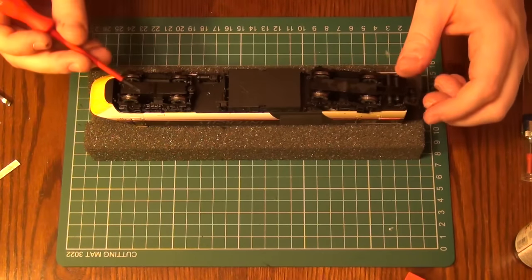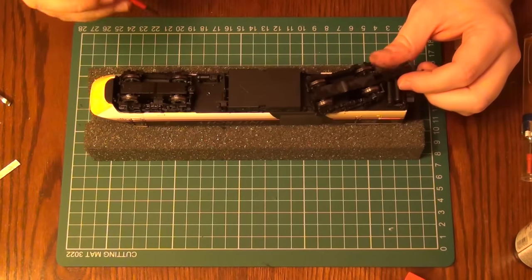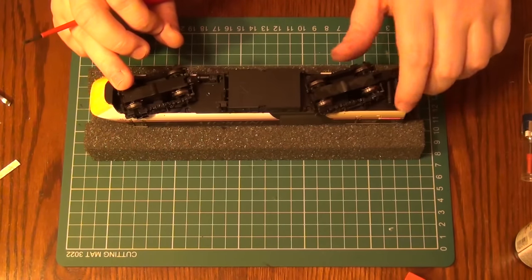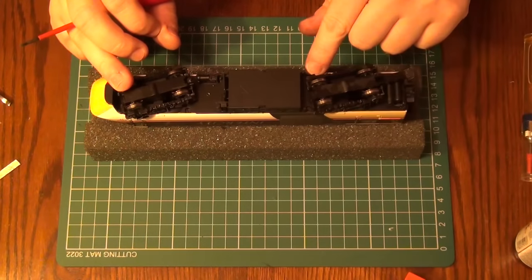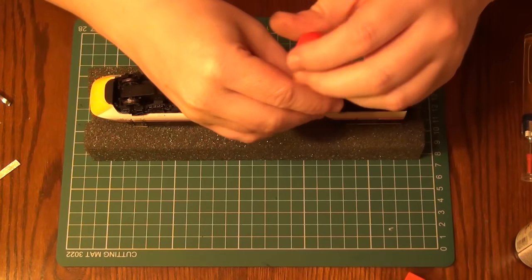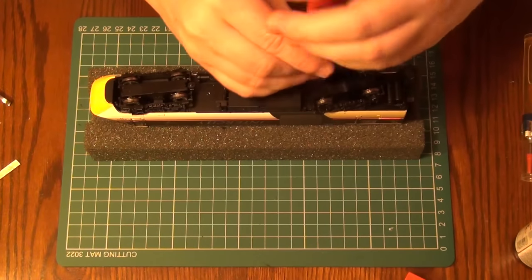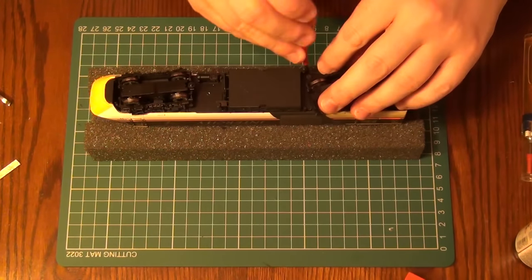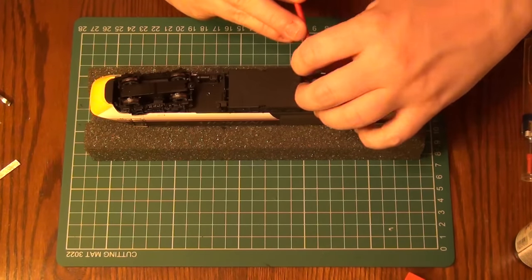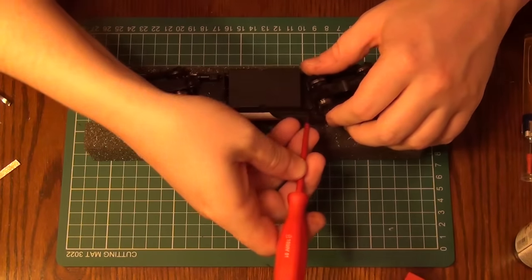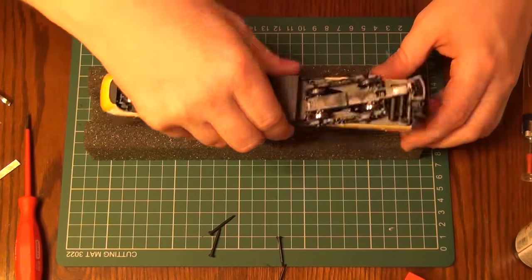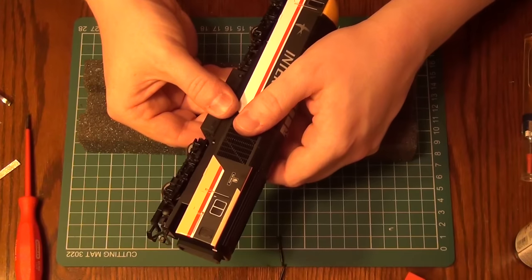So if we take the lid off and have a look inside, we'll see how we can just lubricate that mechanism. Now to get inside these models there are four screws hidden just underneath the corners of the bogies here. So a flat head screwdriver. Just lift those out. With those four screws removed the body then comes away quite easily.